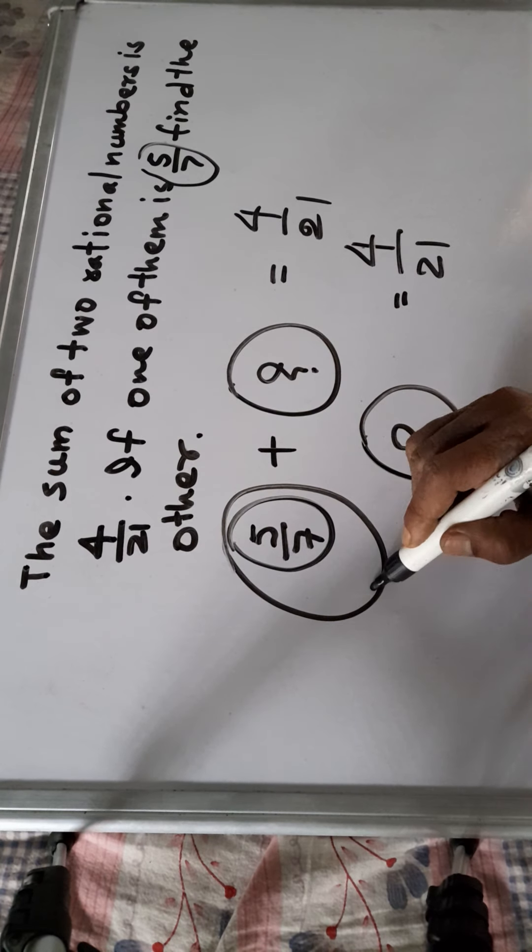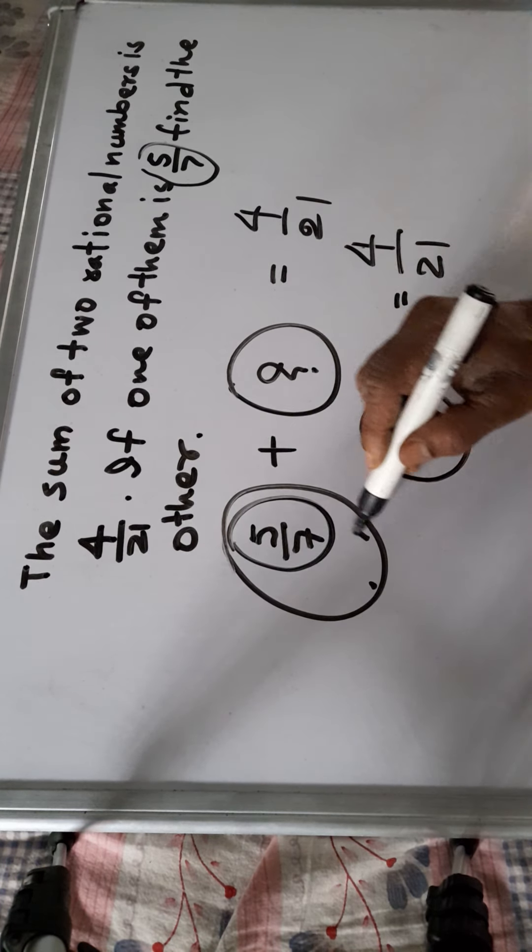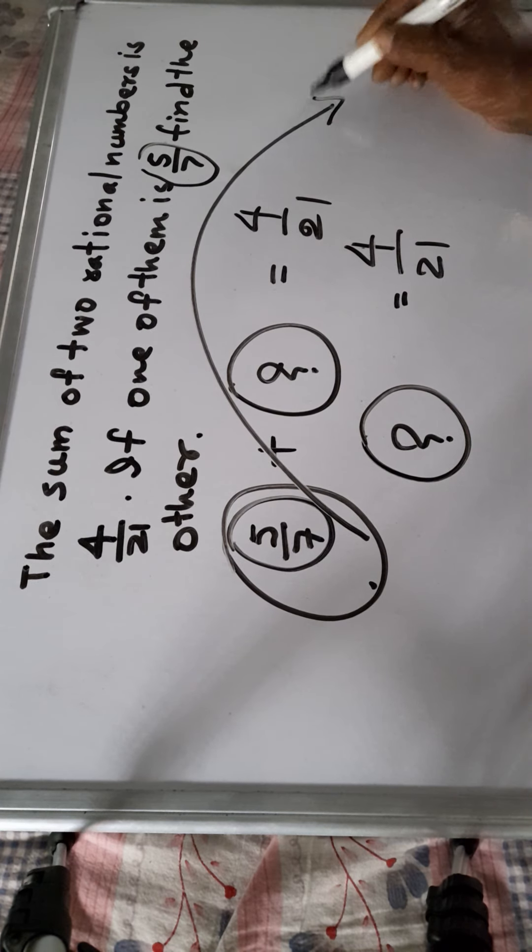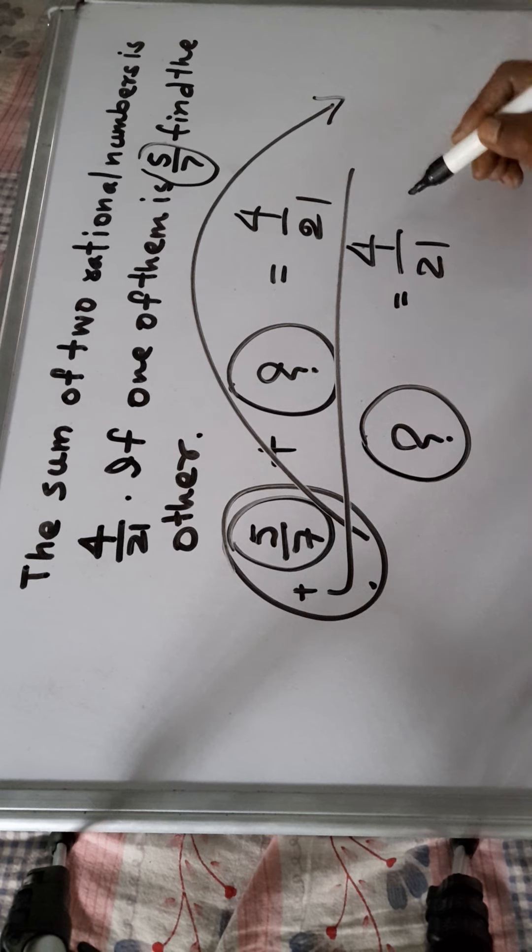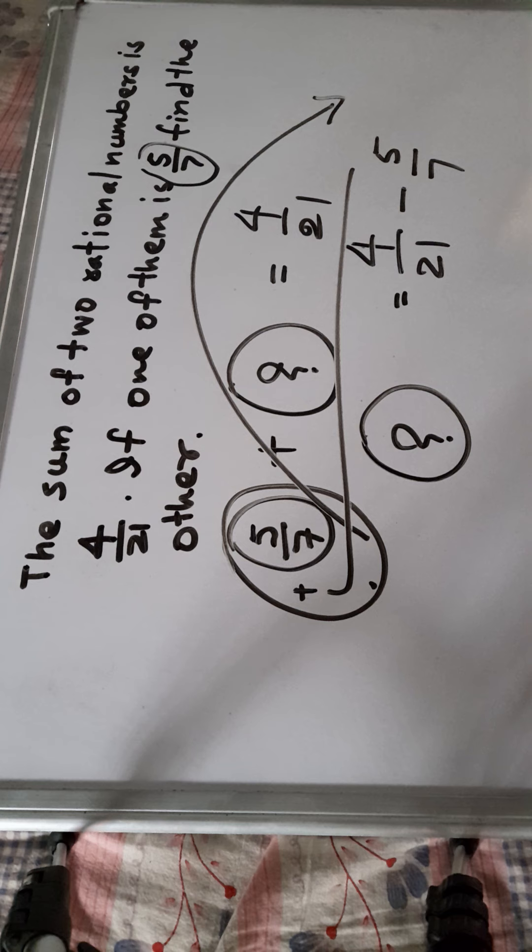5 by 7 was in left side of the equal so it will go to the right side and if it was plus so it will be minus here, minus 5 by 7, minus 5 by 7.